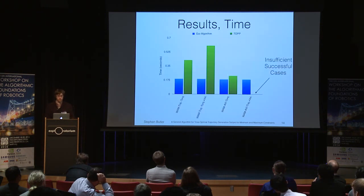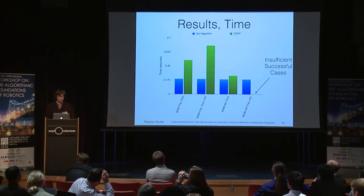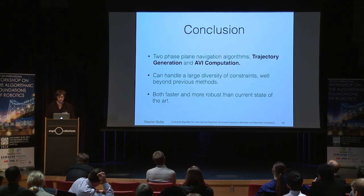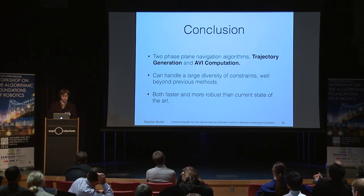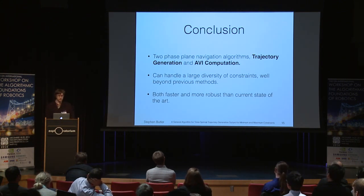As conjectured earlier, admissible velocity intervals should see similar time complexity to trajectory generation, and we see this is in fact the case for our algorithm — it's even across the board, whereas there's high variance within the TOP library. In conclusion, I've presented two phase plane navigation algorithms: one for trajectory generation and one for AVI computation. Both handle a large diversity of constraints well beyond previous methods, and both are faster and more robust than the current state of the art.